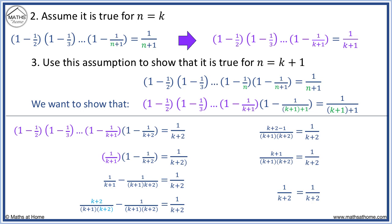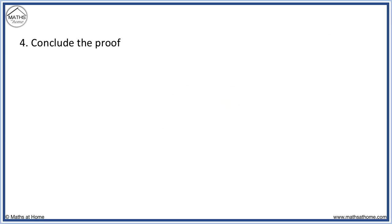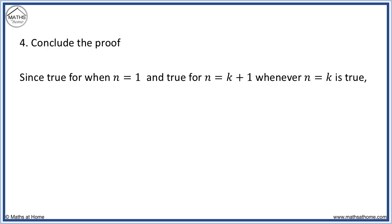The result for n equals k plus 1 has been proven. Finally, we conclude the proof. We state that the result was true for the base case of n equals 1, and true for n equals k plus 1 provided it was true for n equals k — we used our assumption in step 2 to complete the proof in step 3. Therefore, the statement is true for all positive integers.